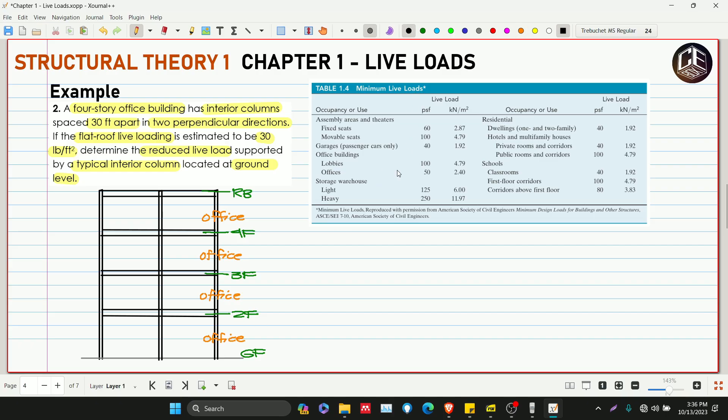Let's find the live load for office. Our L0 under office in English units PSF is 50 PSF or 50 pounds per square foot. We need to find the reduced live load on our interior column at ground floor level. On the flat roof, the live loading is equivalent to 30 pounds per square foot.